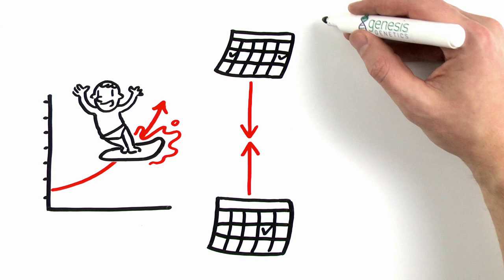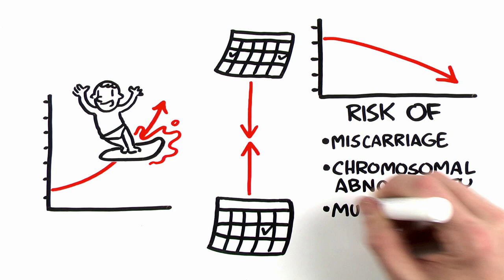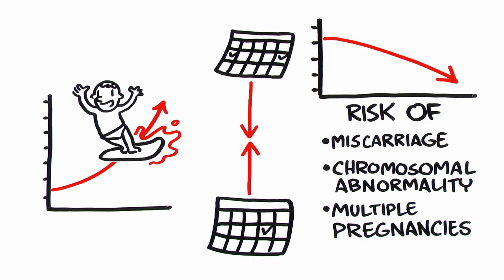PGS lowers many risks: the risk of miscarriage early in pregnancy, the risk of a live birth in which the baby has a chromosomal abnormality such as Down syndrome, and the risk and costs associated with multiple pregnancies.